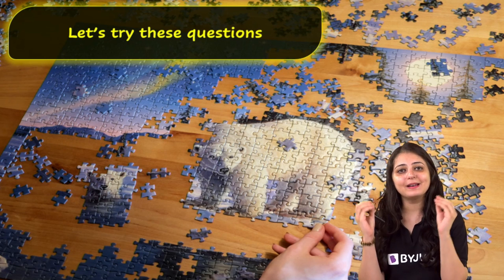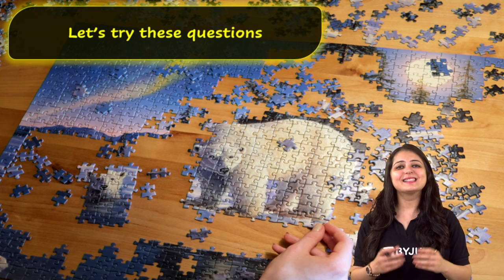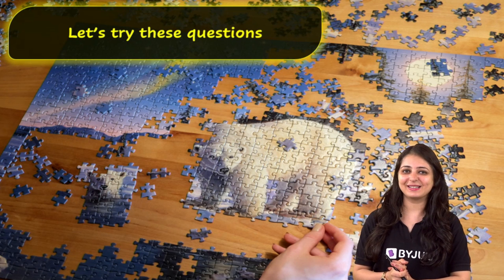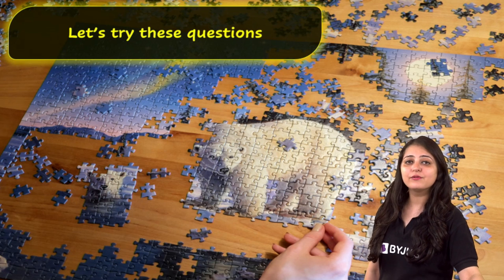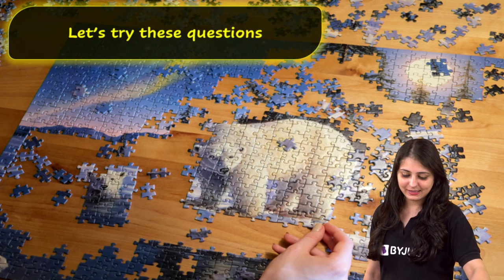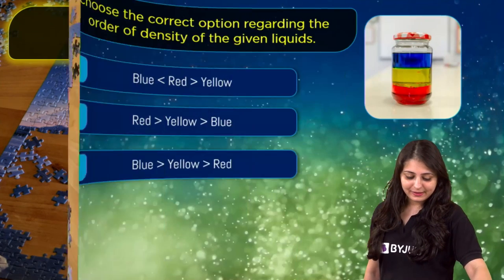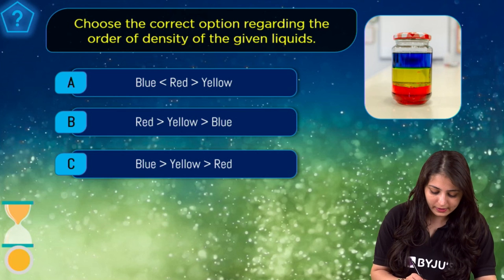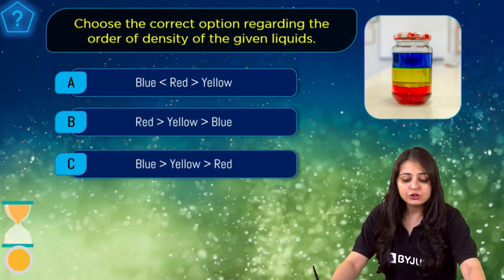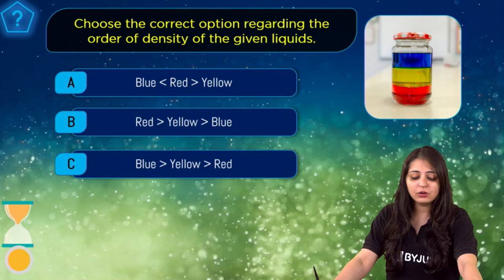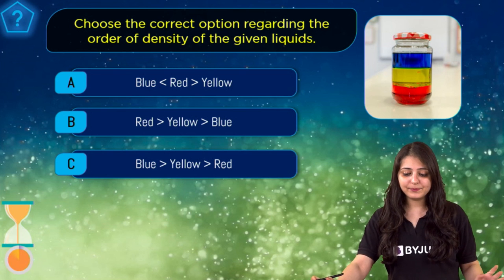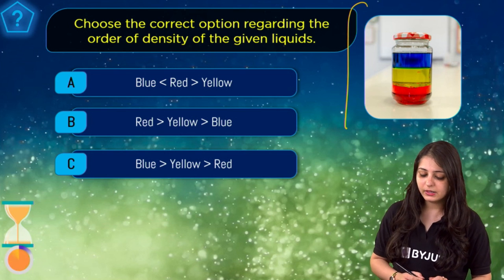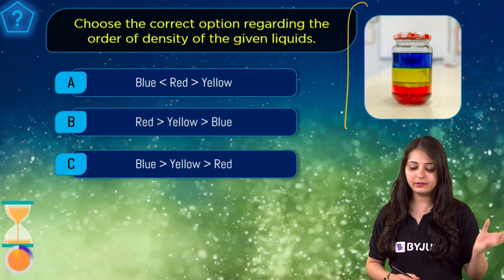Now that the concept is clear, let's apply this knowledge and solve some questions. I'll give you 30 seconds per question. Question number one: choose the correct option regarding the order of density of the given liquids. You can see some layers being formed — a blue layer, a yellow layer, and a red layer. Your timer has started.